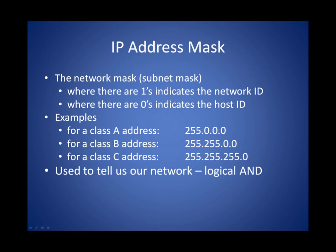Each class has its own mask. For example, Class A has a 255.0.0.0 mask. To determine the network portion and host portion, you take an IP address and AND it with the mask for that IP address, and the result gives you the network ID. The binary ones in the mask — if we convert 255 to 8 ones — indicate the network portion, and the zeros indicate the host portion. In Class A, we have one byte of addressing for networks and three bytes for hosts; the opposite is true for Class C.